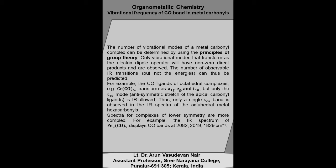However, we can observe more CO stretching bands in the FTIR spectrum if the symmetry of the complexes is lowered. For example, consider Fe2(CO)9 — it displays three CO bands at 2082, 2019, and 1829 cm⁻¹.